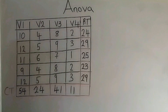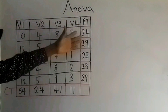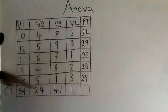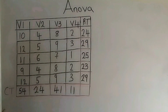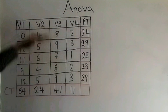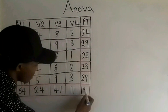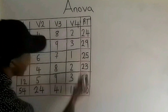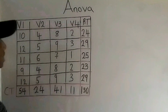After getting the row total and the column total, the next step is to check whether the sum of row totals and the sum of column totals are equal. Normally, if they are not equal, then something is wrong with the calculation. When I check, I got 130 for both. So this is correct.